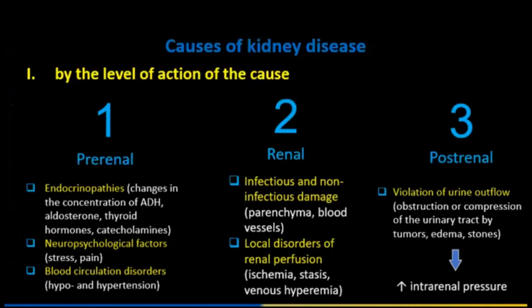Causes of kidney disease: by the level of action of the cause, first is pre-renal — endocrinopathies, neuropsychological factors, blood circulation disorders. Second is a big portion — renal factors or causes, including infection and non-infection damage, local disorders of renal perfusion. Third is post-renal — violation of urine outflow and changing intrarenal pressure as a result.